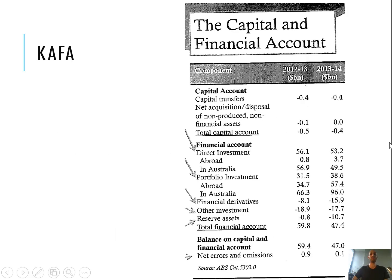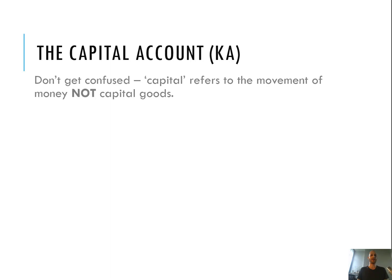Here is your overview of the capital and financial account. See how it's divided into the capital account, the financial account, and then the balance on the CAFA. We're going to go through each of these components. Please don't get confused — capital here refers to the movement of money, not capital goods.